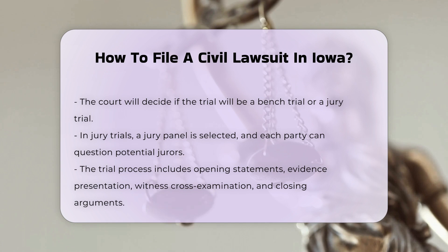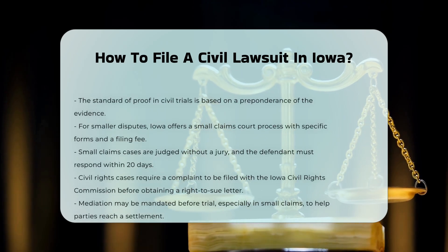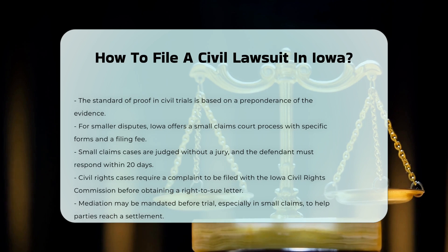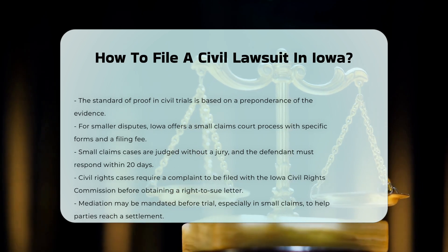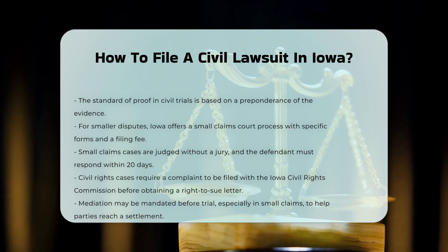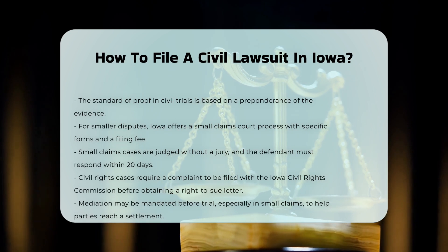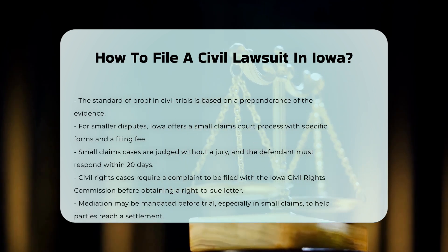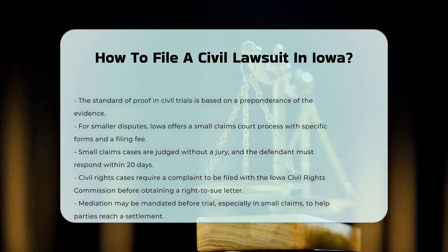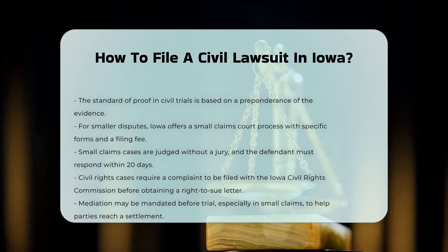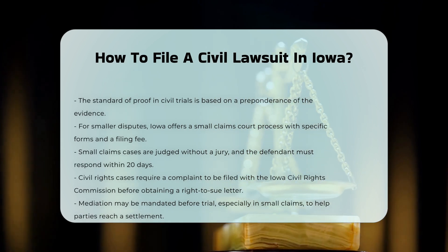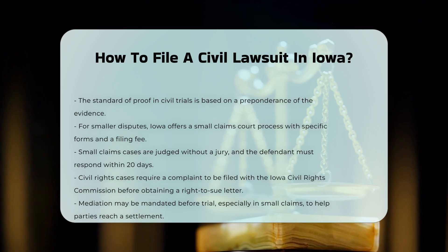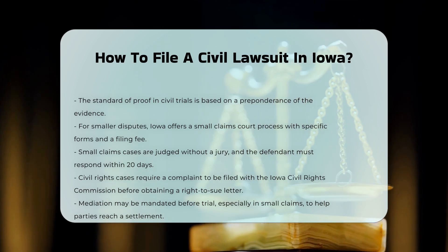Right-to-Sue Letter for Civil Rights Cases. If your case involves civil rights issues, you may need to file a complaint with the Iowa Civil Rights Commission first. After the complaint has been on file for 60 days, you can request a right-to-sue letter to take your case to district court. The lawsuit must be filed within 90 days of receiving the right-to-sue letter.